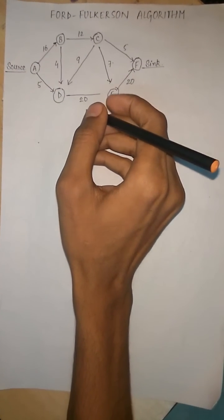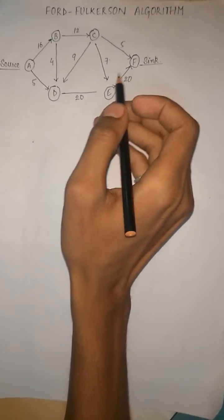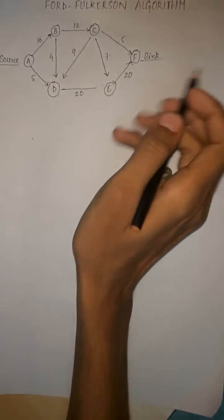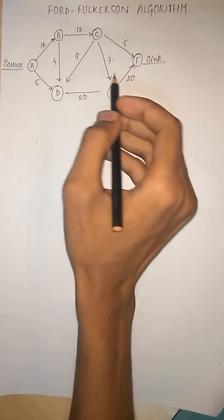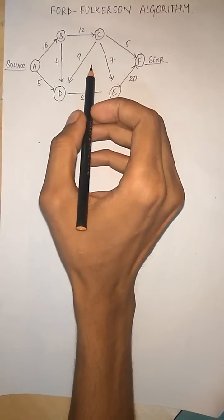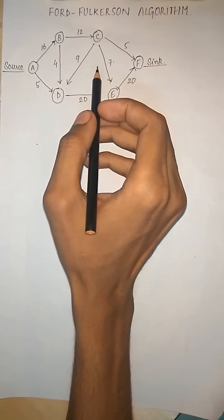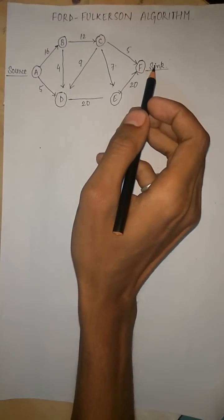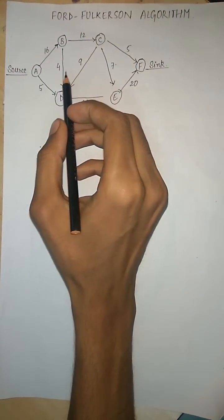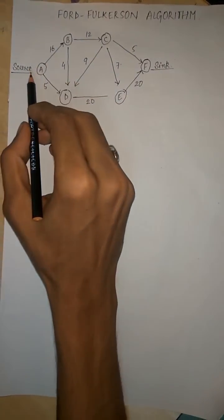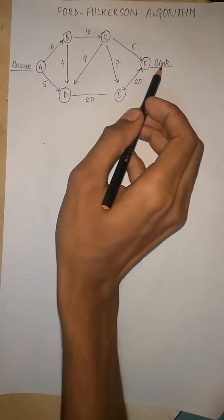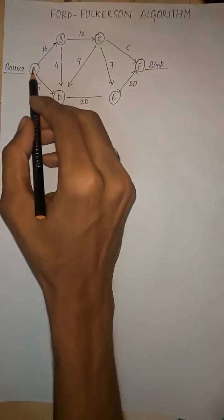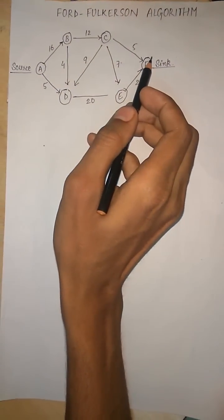Our topic is the Ford-Fulkerson Algorithm. This is the given graph. We need to find a flow network where every edge has a capacity, and there is a source and a sink. We need to find the maximum flow from A to F.